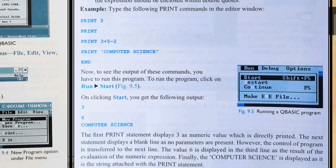On clicking Start, you will get the following output: 3 and 6. The first statement PRINT 3 displays 3. The equation 3+5-2 equals 6, so it displays 6. And computer science displays the string.